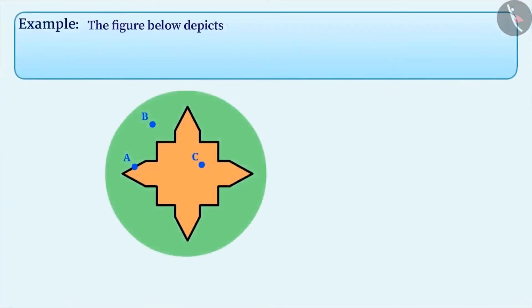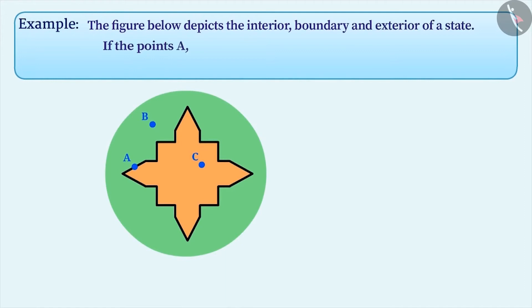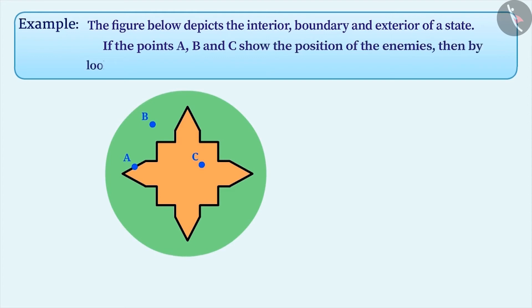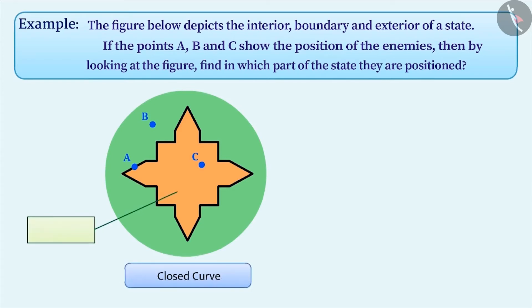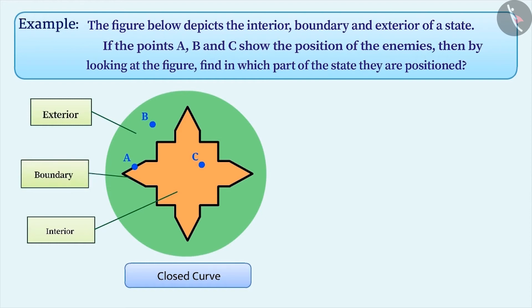In the given figure, the interior, boundary, and exterior of a state are marked. Points A, B, and C represent certain positions of the enemy. By looking at the figure, find out which part of the state the enemies are positioned in. The given figure is a closed curve. The part inside the closed curve is called the interior, the part outside is called the exterior, and the part of the curve is called the boundary. Point A is on the boundary, point B is in the exterior, and point C is in the interior.